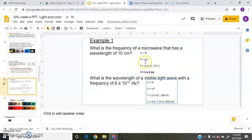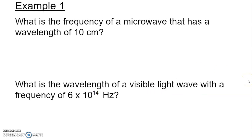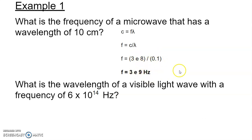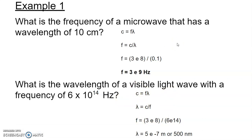Let's look at sample problems. The speed of light equation works just like other wave speed equations, but velocity is always 3 × 10⁸. To find frequency given a wavelength of 10 centimeters: convert to 0.1 meters, then rearrange — 3 × 10⁸ divided by 0.1 gives 3 × 10⁹ Hz, a very high frequency. To find wavelength given a frequency of 6 × 10¹⁴ Hz: 3 × 10⁸ divided by 6 × 10¹⁴ gives 5 × 10⁻⁷ meters, or 500 nanometers — which corresponds to blue light.